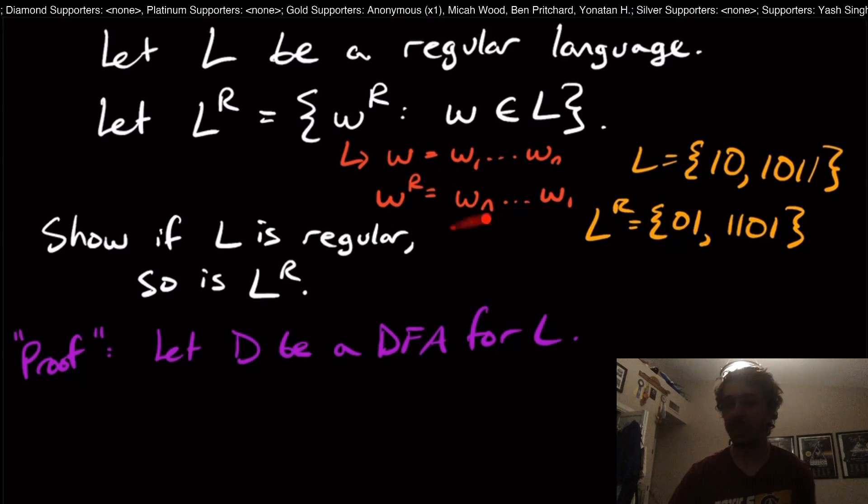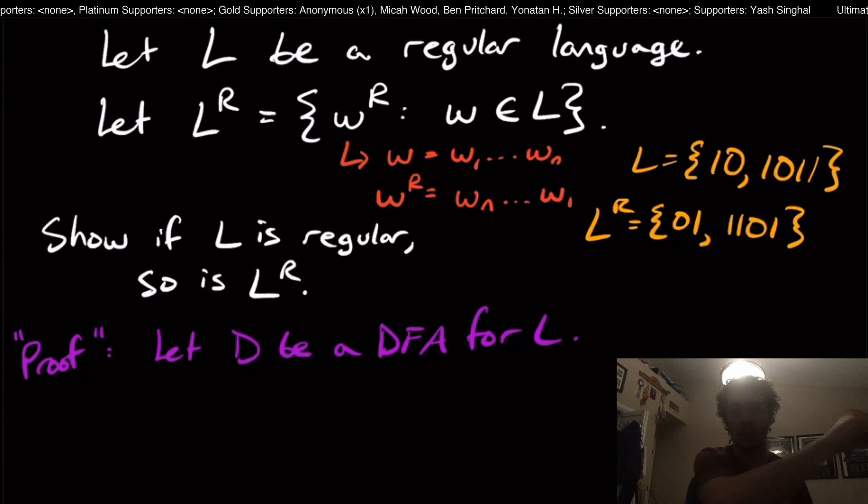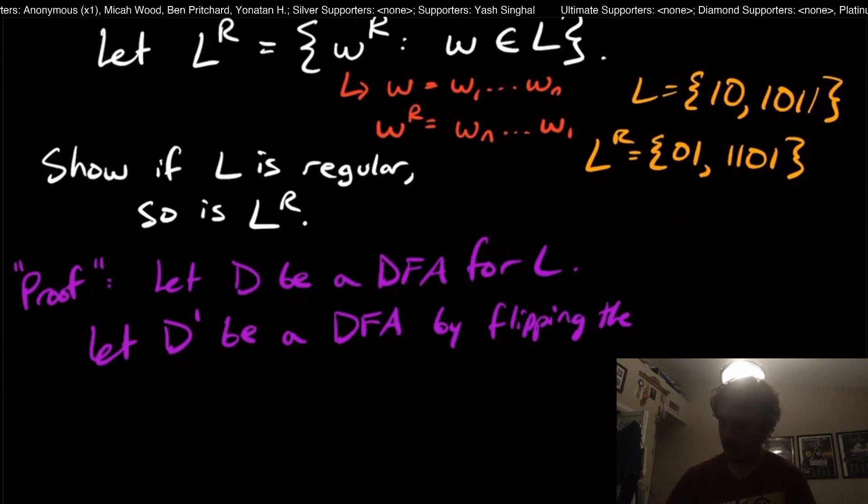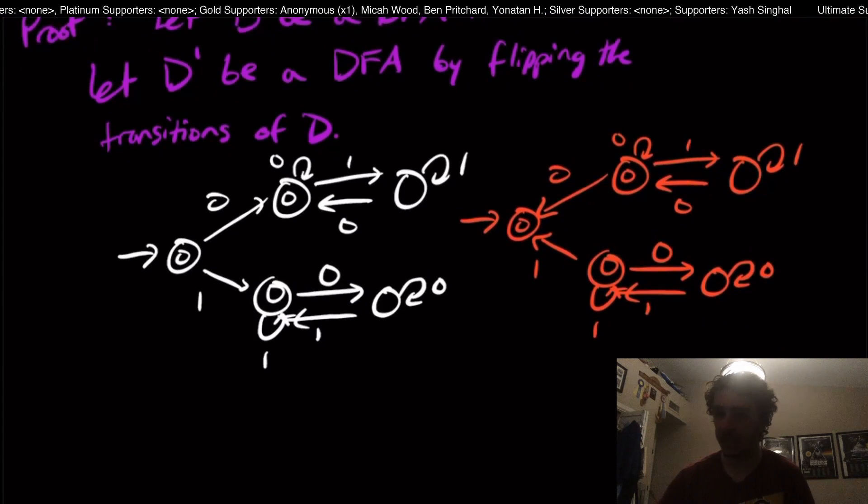We have a regular language here and we're going to define L to the R as basically the reverse language. And what does this mean? It means that we're going to take every string in the language right here. So W is a string in the language and we're going to flip it around.